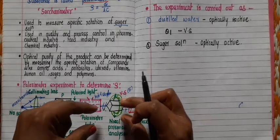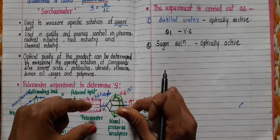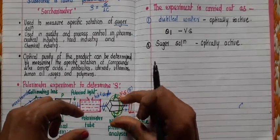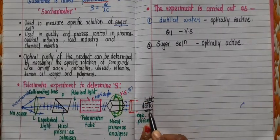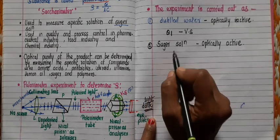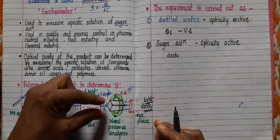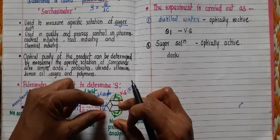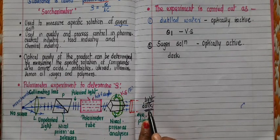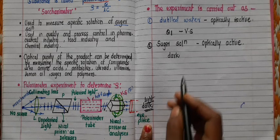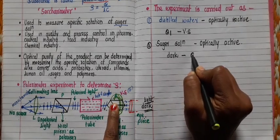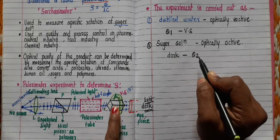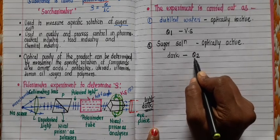We again rotate the analyzer through a certain angle until we observe complete darkness at the eyepiece again. At that particular point, we take a reading on the vernier scale, which is denoted as theta 2 — the angle of optical rotation for the sugar solution.